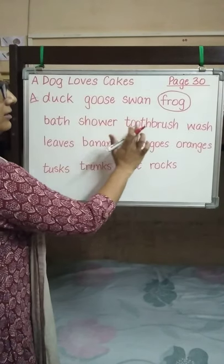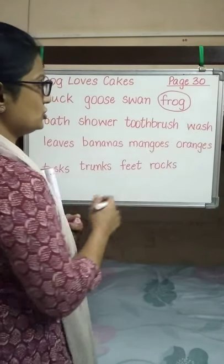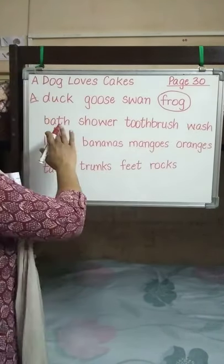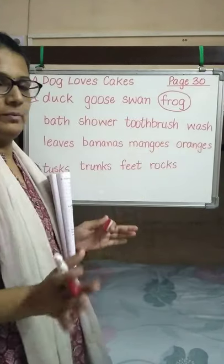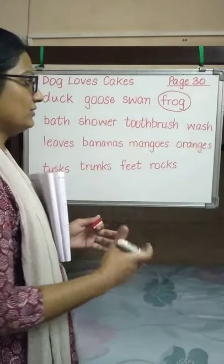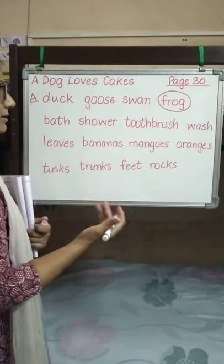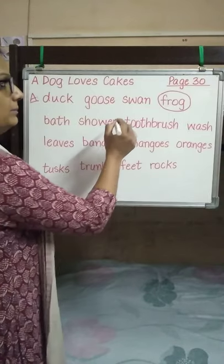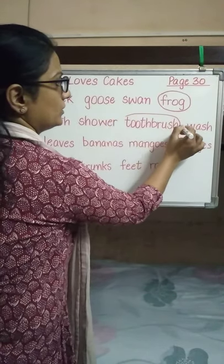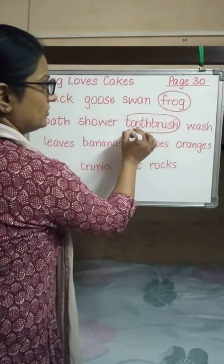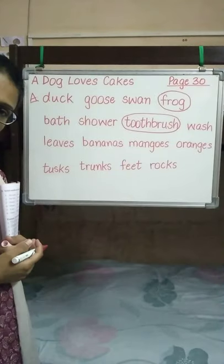Next group: bath, shower, toothbrush, wash. Now bath, shower and wash mean the same thing — we are cleaning our body. But toothbrush is the odd one out in this, so we are going to circle it.